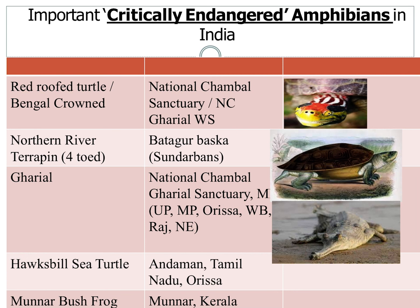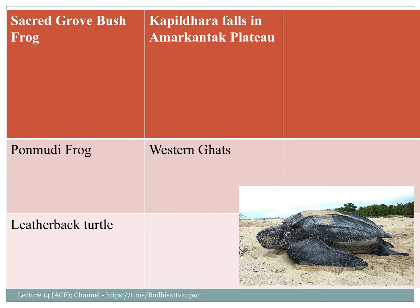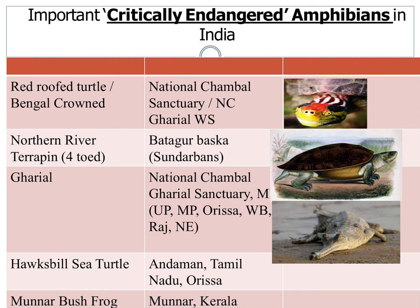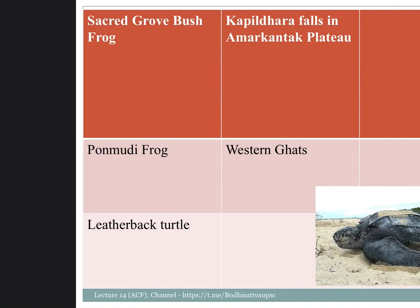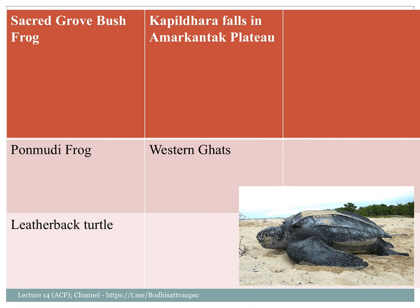The Hawksbill sea turtle is found along the coasts of Andaman, Tamil Nadu, and Orissa. The Munar Bush Frog is found inside Munnar, Kerala. After Munnar was deforested, plantation activity inside the forest has threatened this frog. The Gooty spider is also found near Kapil Dhara Falls.